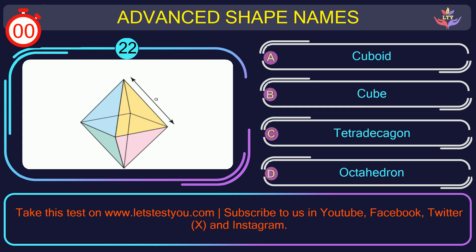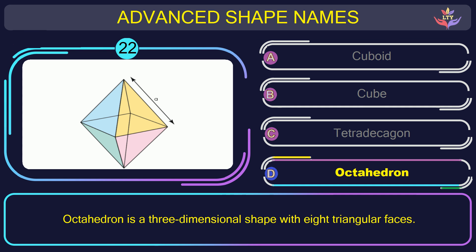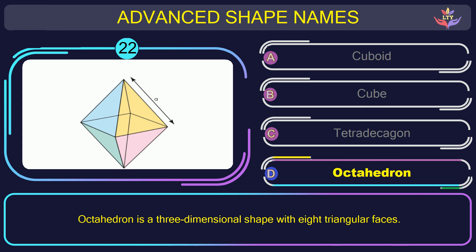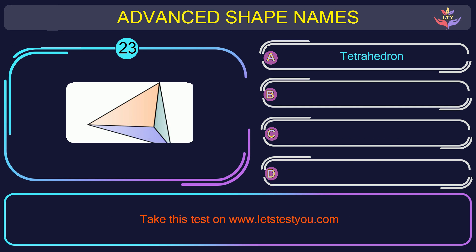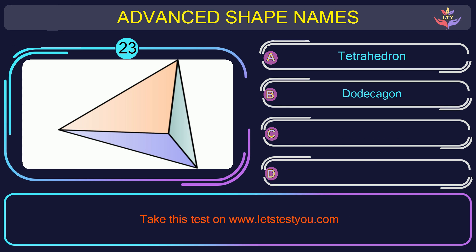Question number twenty-two. Can you name the shape you see in this picture? The correct answer is option D. Octahedron. Octahedron is a three-dimensional shape with eight triangular faces.